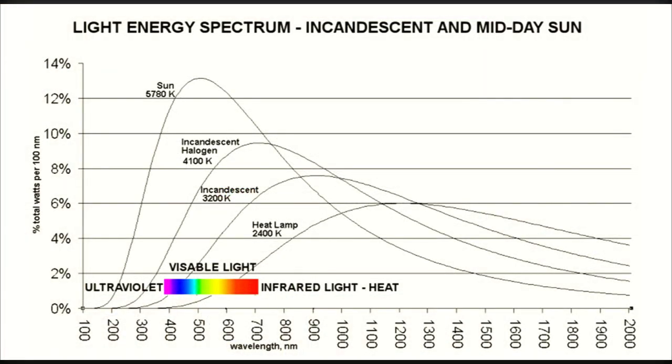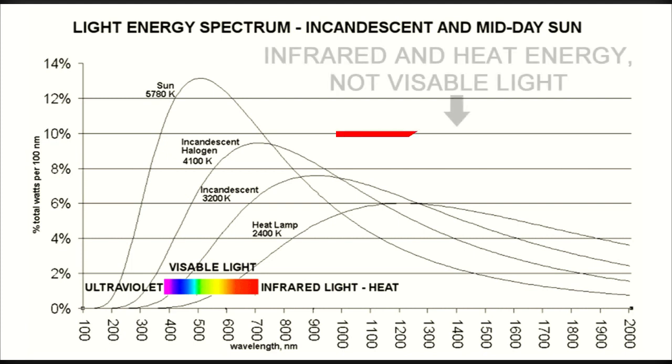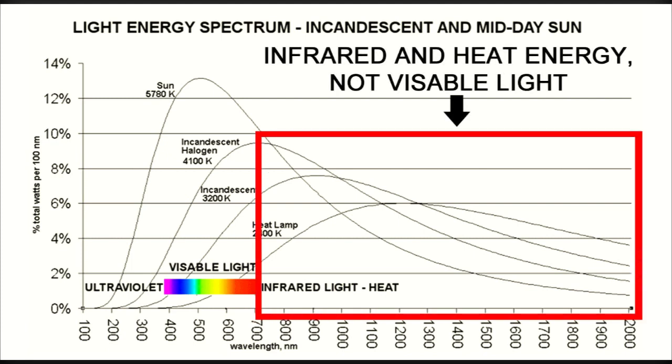This is a graph of the spectrum of several sources including midday sunlight and various incandescent color temperature sources including 4100 K and 3200 K. Notice how much of the energy is infrared and heat.